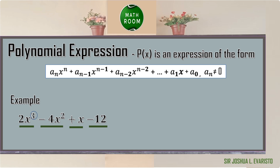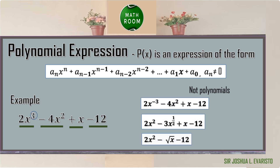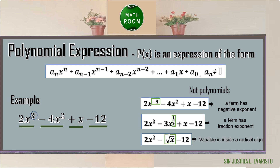To understand more about polynomial expressions, let me show you examples of non-polynomial expressions. The first expression is not polynomial since a term has a negative exponent. The second expression is not polynomial since a term has a fraction exponent. The third expression is not polynomial since the variable is inside a radical sign.